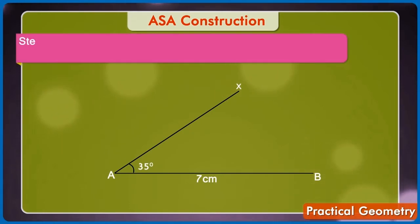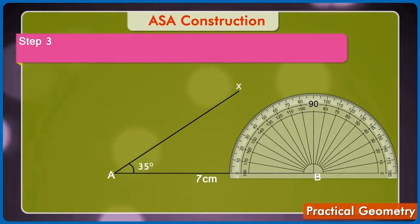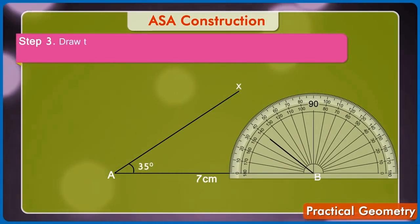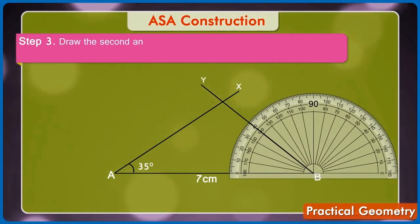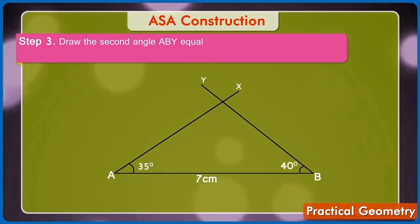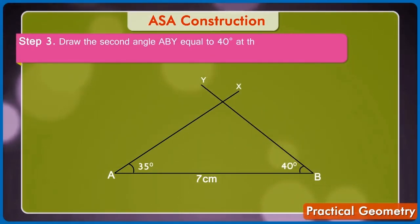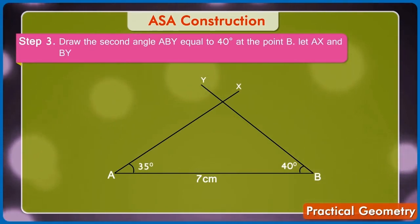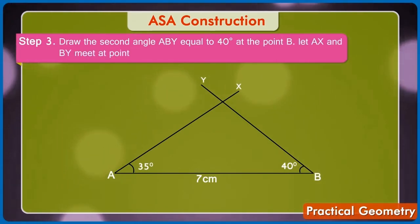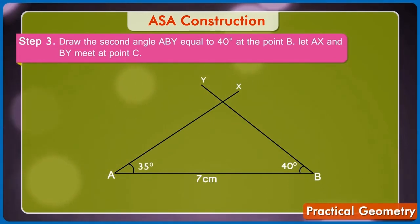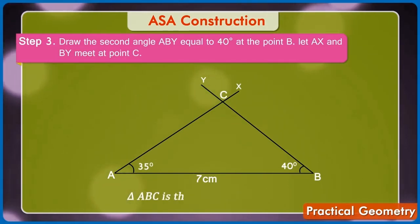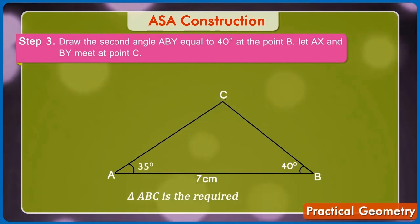Step 4: Again, use the protractor to draw the second angle ABY equal to 40 degrees at the point B. Let AX and BY meet at point C. Then ABC is the required triangle.